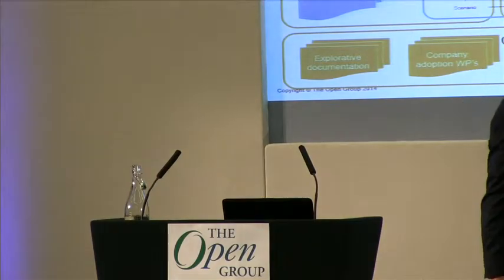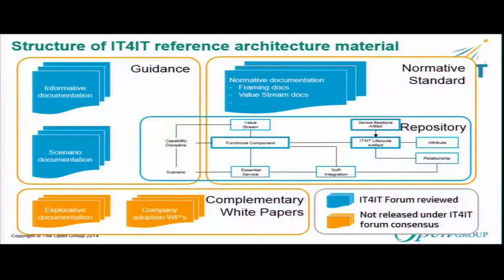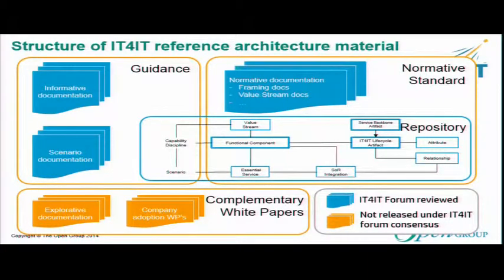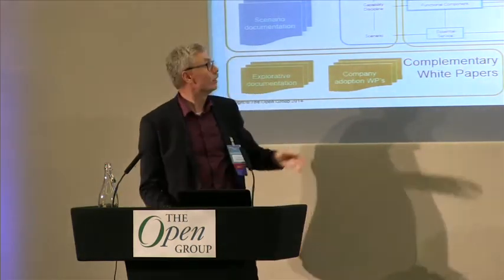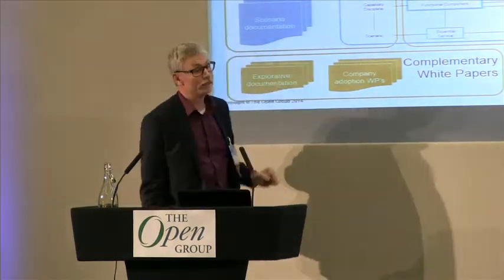The artifacts have attributes and relationships. Some of the artifacts are special because they form what we call the service backbone, which I will talk about together with Richard after the break at around 4 o'clock — so come back for that one. There are also some essential services being delivered by the functional component — that is, create incident, delete incident, etc. These relate to the capabilities an IT organization needs to deliver and the scenarios that exist there, and that goes into the guidance part.